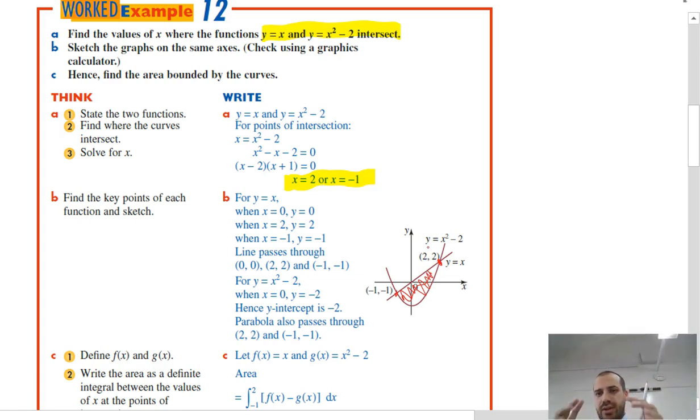Now, if we want to find the area between two curves, we take the lower function. Now, for this particular part of it, the lower function is y equals x squared minus 2, and we subtract it from the higher function. And in this case, the higher function is x.